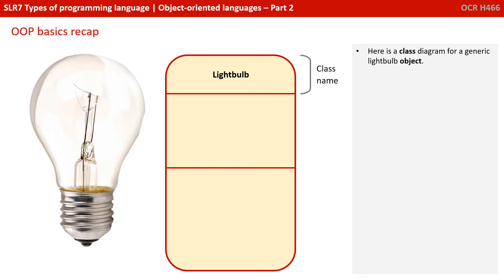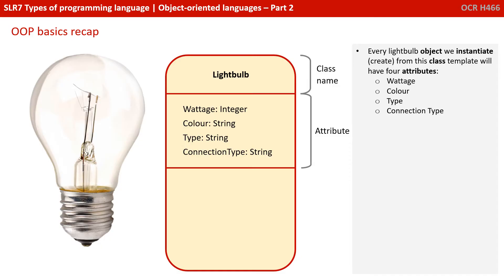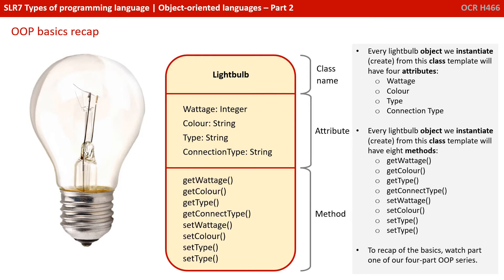Let's continue with our example from the previous video. Here is a class diagram for a generic lightbulb object. We have the class name, four attributes that every object we instantiate from this class will be required to have, and every object created from this class will have eight methods associated. If you want to recap the basics, watch part one of our four-part series first.